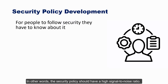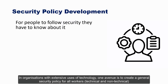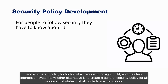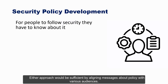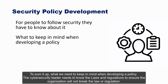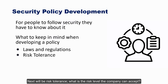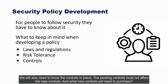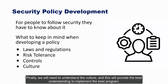The security policy should have a high signal-to-noise ratio. In organizations with extensive technology use, one avenue is to create a general security policy for all workers and a separate policy for technical workers who design, build, and maintain information systems. To summarize, when developing a policy the cybersecurity leader needs to know the relevant laws and regulations, understand the company's risk tolerance, know the existing controls, ensure new controls do not conflict with existing ones, and understand the organization's culture to implement the best program.